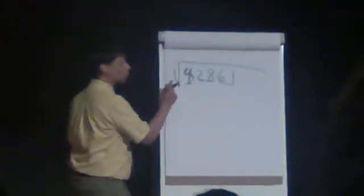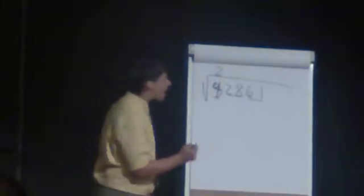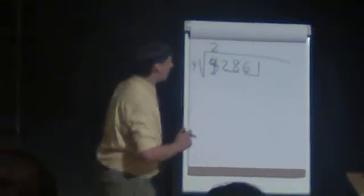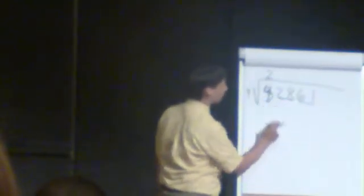So I start by taking the largest number whose square is less than or equal to four. Of course, that's two. So two squared is four. And the divisor for the rest of the problem is double this number. It's the number four. Then you do four minus two squared. Four minus two squared is zero.